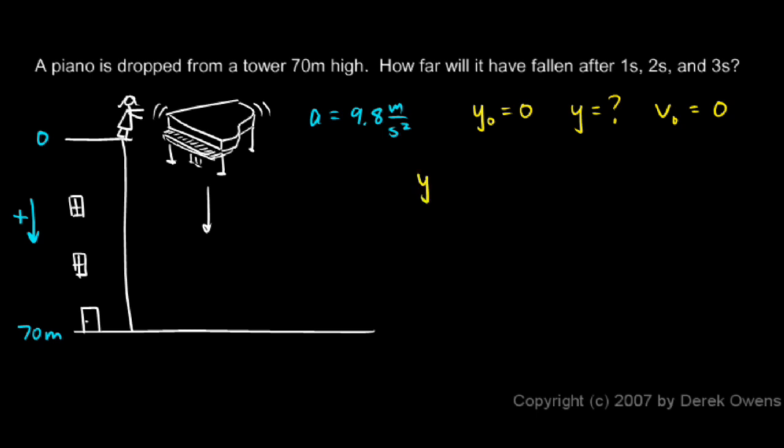And I can use this equation. Y equals Y zero plus V zero T plus one half AT squared. And you recognize that as the equation for position based on time. The position of the object Y at any given time T if I know the initial velocity, the acceleration, and the initial position. The only difference here is I'm just using a Y instead of an X. And that's fine. And again I'm using Y because it's vertical motion.